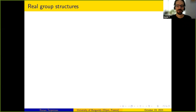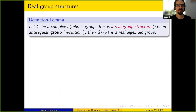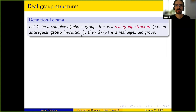I will consider varieties with group actions. First I need to consider real forms on algebraic groups. Let G be a complex algebraic group. If σ is a real group structure — meaning a real structure which is furthermore a group involution on G(C) — then when you do the quotient, what you get is not only a real algebraic variety, it's in fact a real algebraic group.